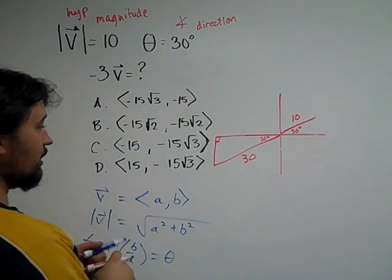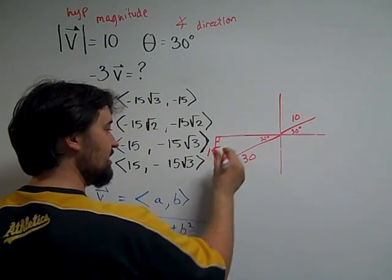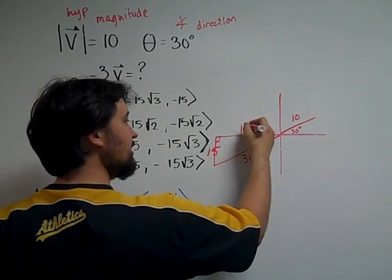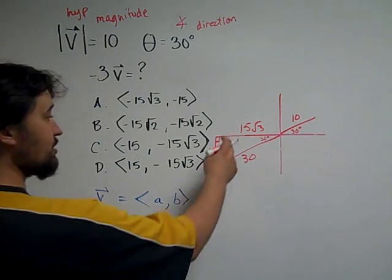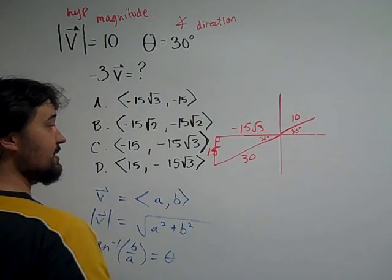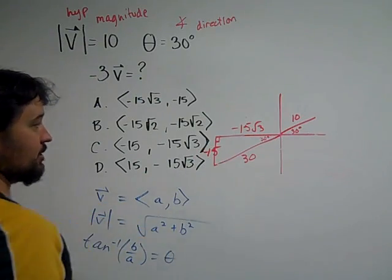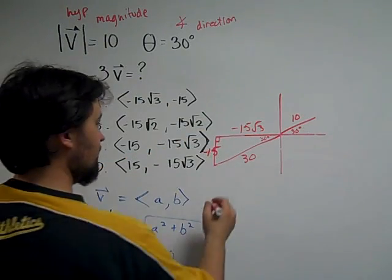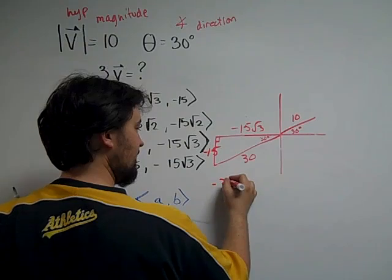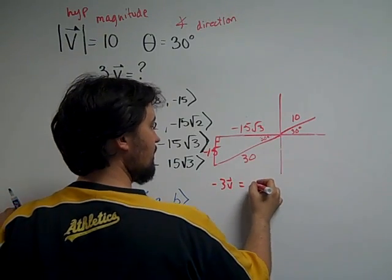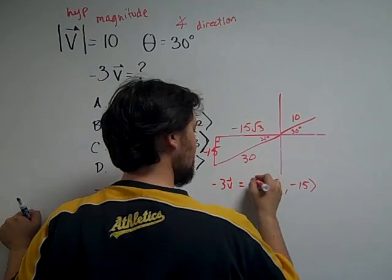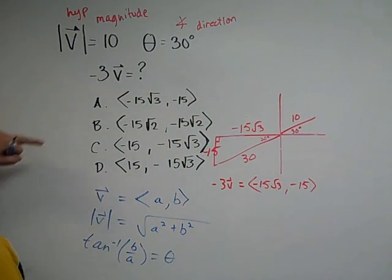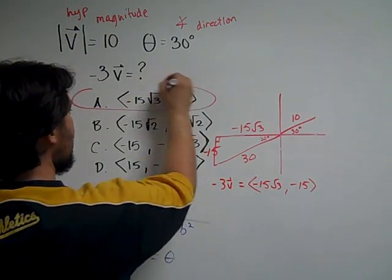Divide by 2 to get the short leg, and you have 15. Multiply by root 3 to get 15 root 3. Last thing we have to deal with is positives and negatives. The X coordinate is negative, as is the Y coordinate. So we have negative 3V equals negative 15 root 3, comma, negative 15. That's our final answer. And we have answer A.